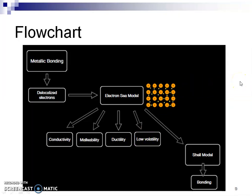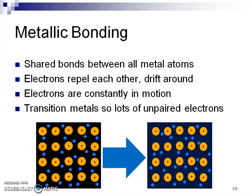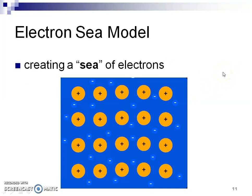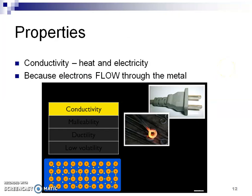He gave a flow chart covering the different properties that metallic bonding gives us. Metallic bonding is the sharing of electrons between metal atoms. Even a pure piece of metal like iron has metallic bonding within it — it's not always two metals combined. Electrons repel each other, which is why they drift around and are constantly moving. Because of these electrons flowing through the metal, metals possess very different properties than non-metals. They are very conductive and they are malleable.